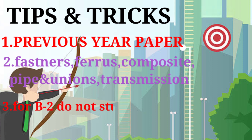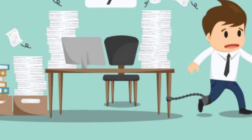For B2 students, don't study composite — just study fastener, ferrous, pipes and union, electrical cable, and transmission, along with previous year papers. Another important thing: at the time of solving previous year question papers, open your book and study the paragraph from where questions are asked.